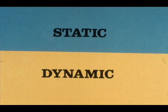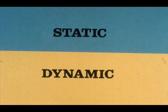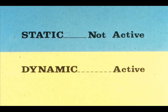Now that you understand what we mean by unbalance, let's be more specific. There are two basic types of unbalance which you will encounter in your work: static and dynamic. Webster defines static as meaning not active, while dynamic means active. Therefore, you will be working with unbalance in parts which are active and those which are not active.